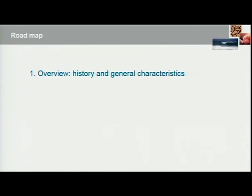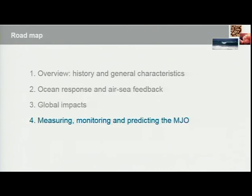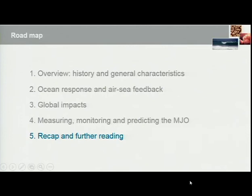I'll give a brief overview, a short history, and outline some of the general characteristics. Then I'll introduce the ocean response — the MJO is primarily an atmospheric disturbance in the tropics, but there is an ocean response and some proposed theories on air-sea feedback. I'll then talk about some of the broader global impacts, not just within the tropics but outside in the extratropics, then cover measuring, monitoring, and predicting the MJO, particularly over the last 10 years with the introduction of a really nice index. Then I'll summarise and give you some references for further reading.